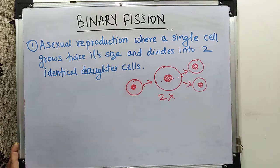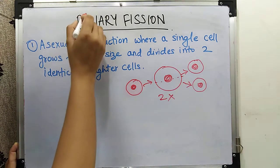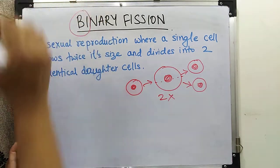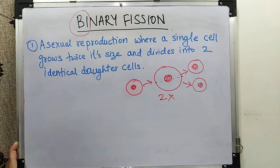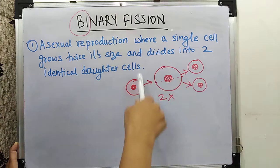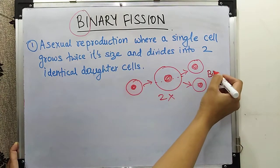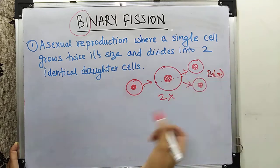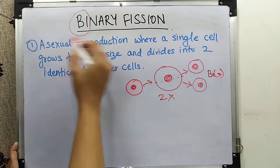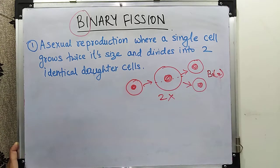Binary fission differs from other types of fission in that only two parts are formed from a single entity. The word 'bi' means two. There are other types of fissions, but binary fission means only two parts form from one entity — that is why it is called binary. How many daughter cells are formed? Two, because this is binary fission — only two are formed from the original cell.